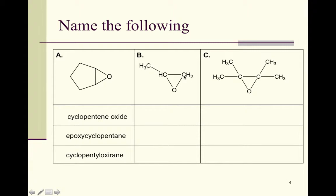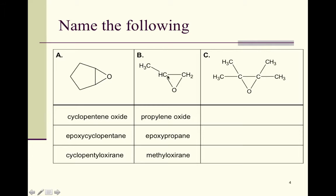For letter B, we have three carbons — the starting material was propylene. The non-systematic name is propylene oxide, and the systematic name is epoxypropane. Neither name needs a numbering system because there's no ambiguity — if the epoxy piece were on either side, it would be the same molecule. The historical name is methyloxyrane.